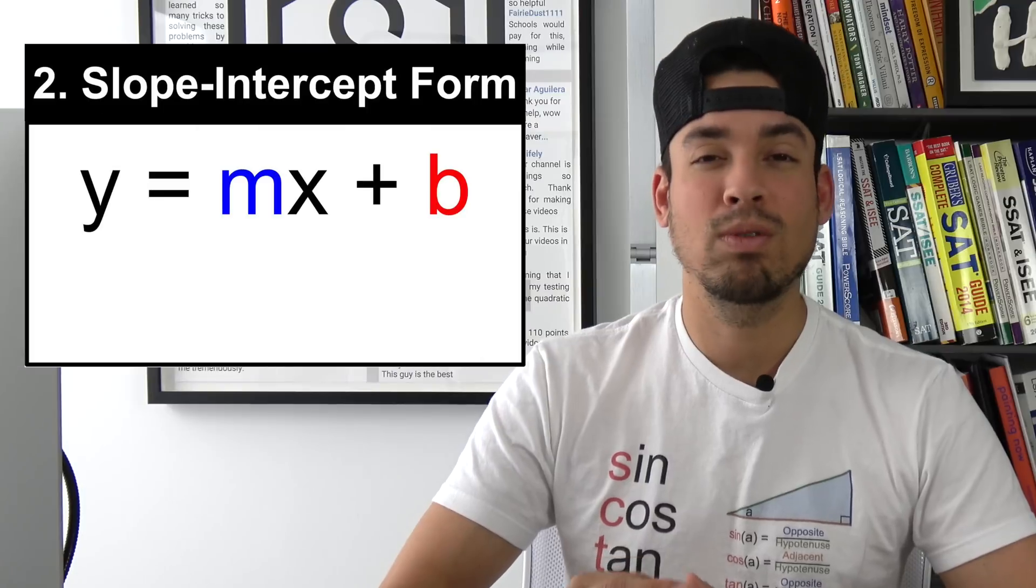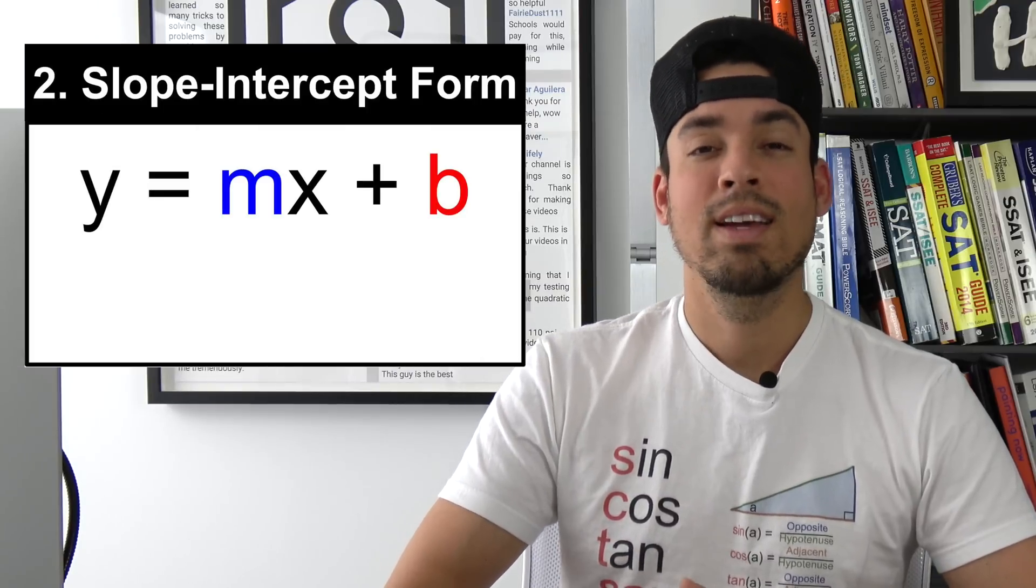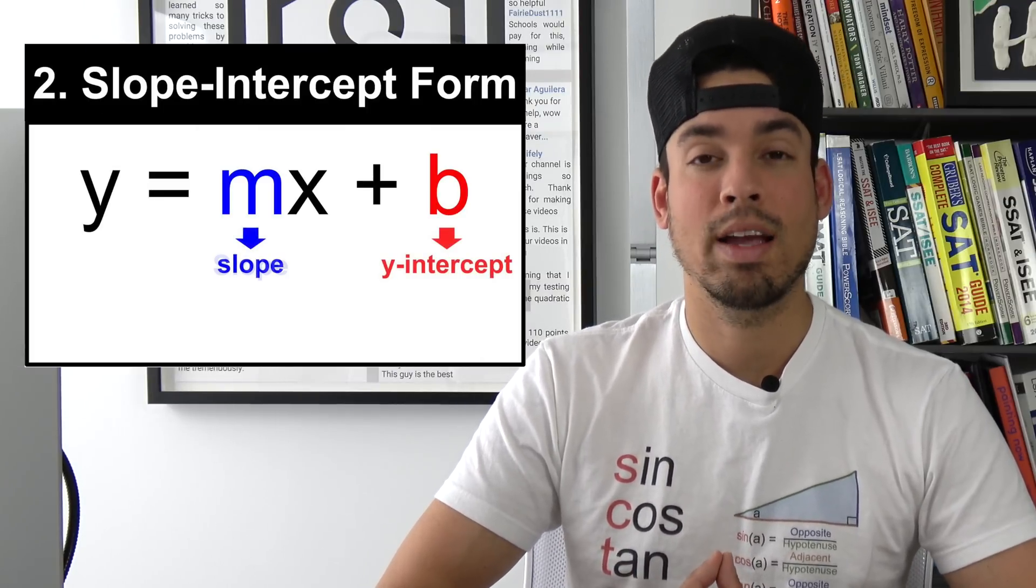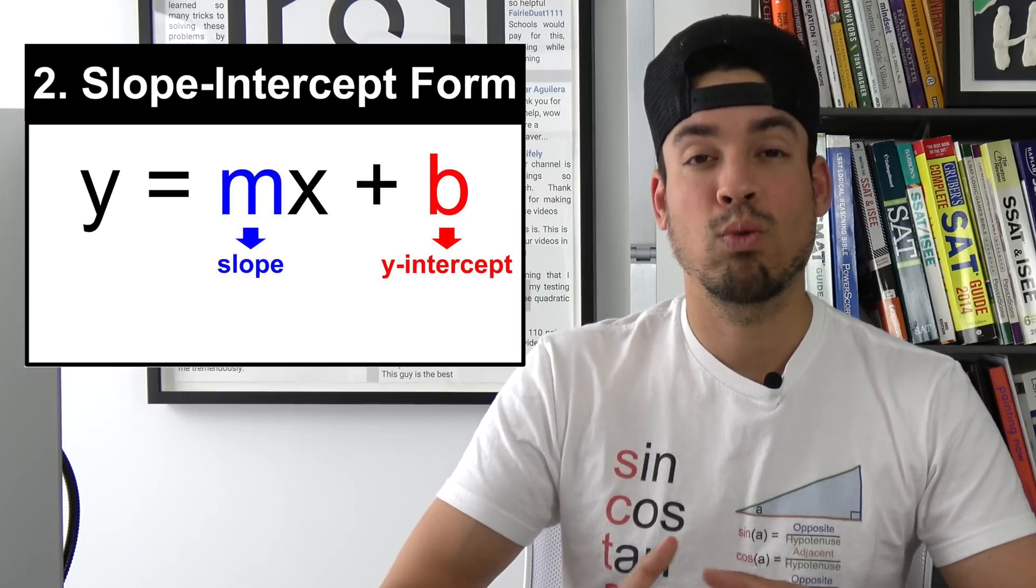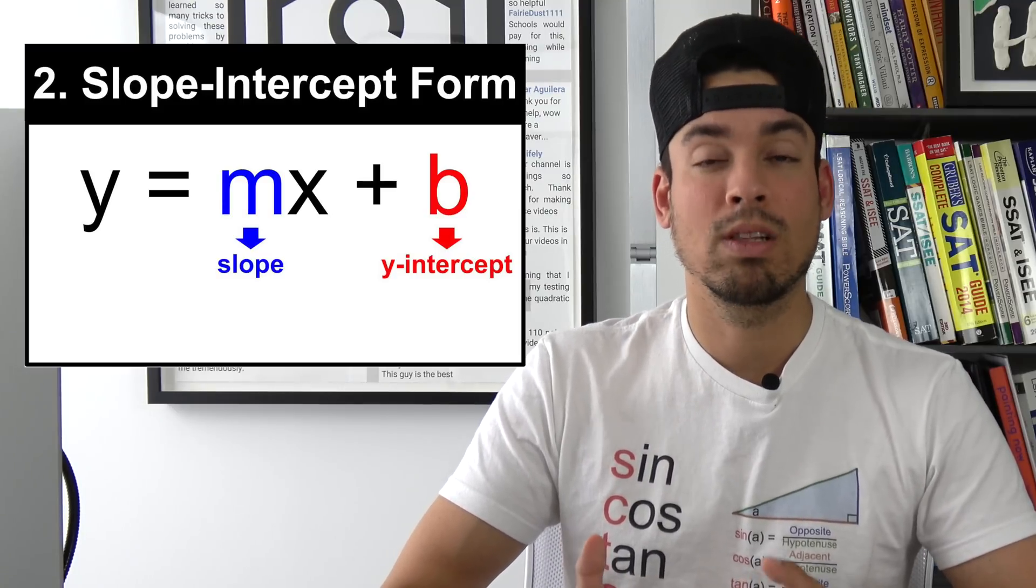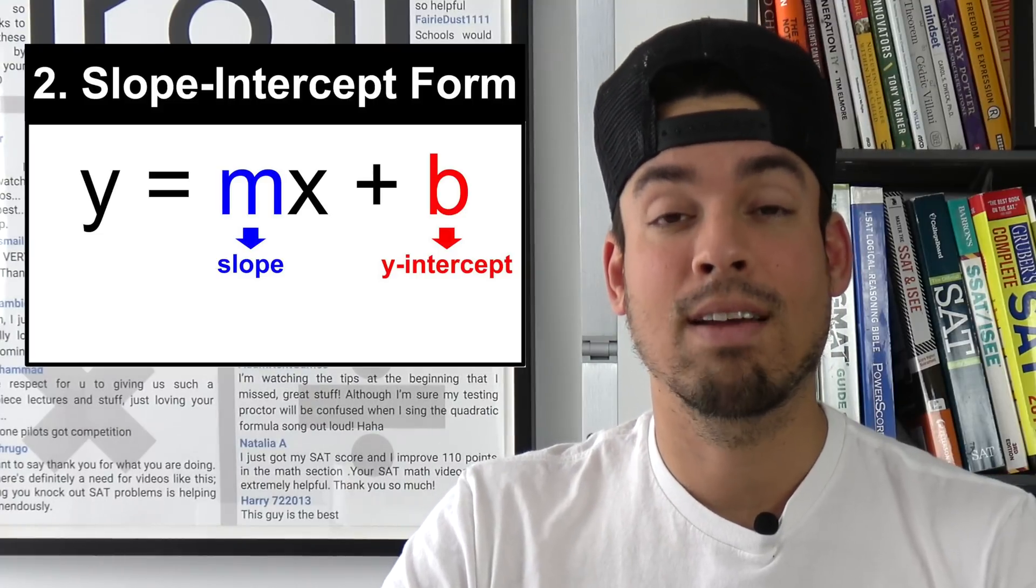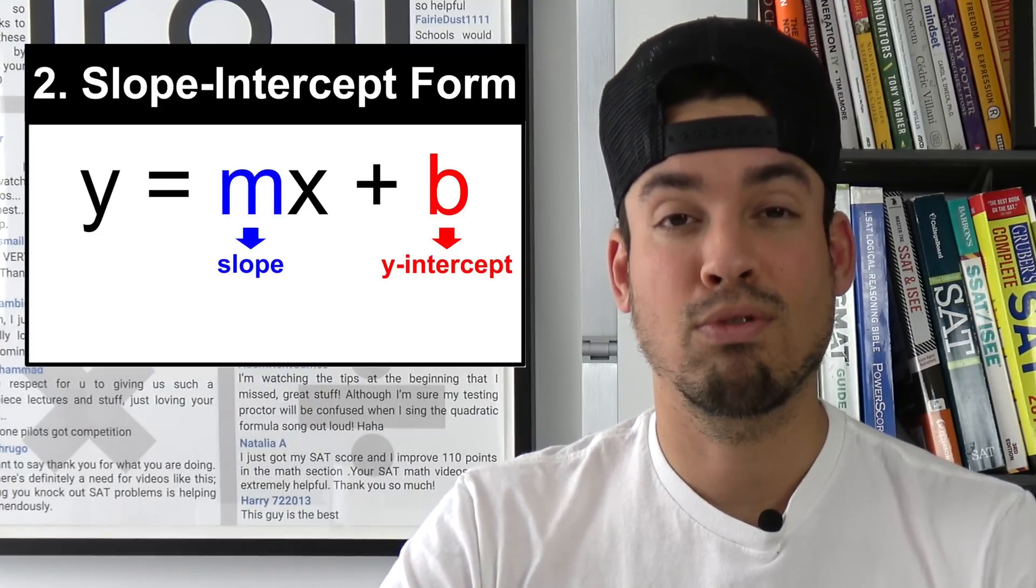The next formula on this list is slope intercept form. Absolutely critical that you know this formula. The m in the formula represents the slope of a line and the b represents the y intercept. And something super important when you're given a linear function or linear equation on this test and it's not in that form, nine times out of ten you got to get it in that form so you can interpret the line properly.